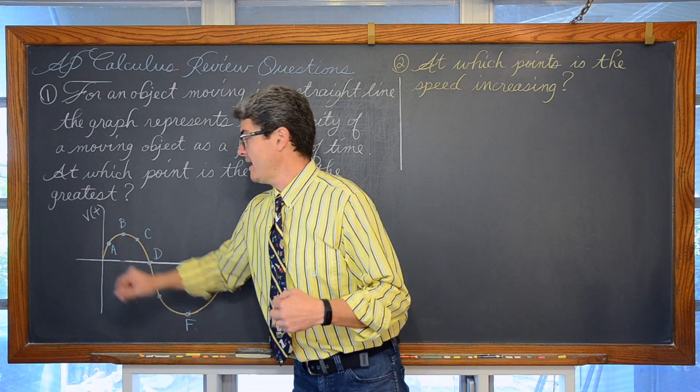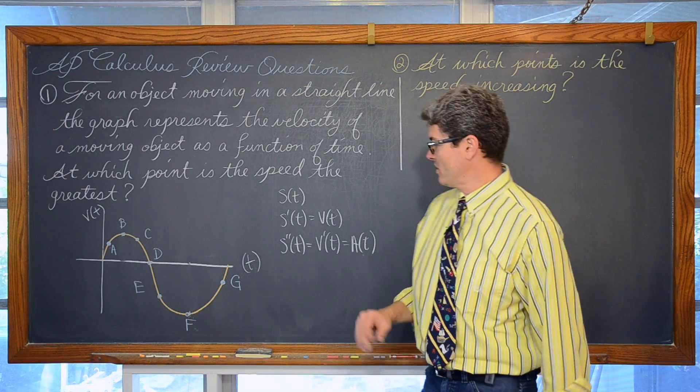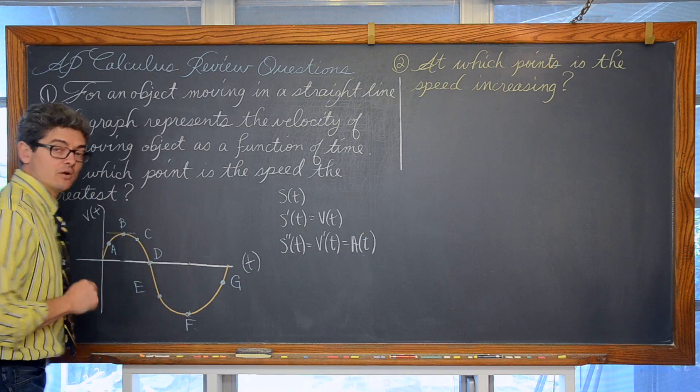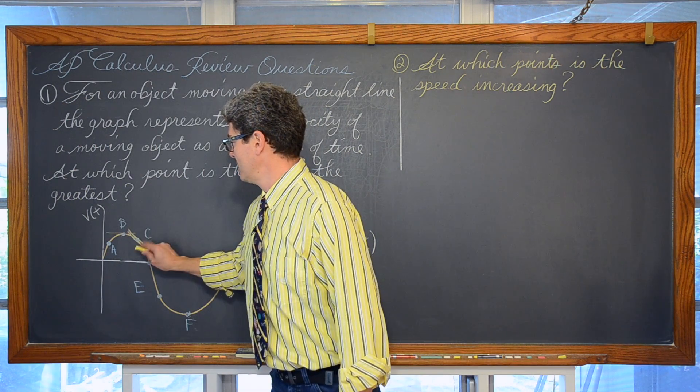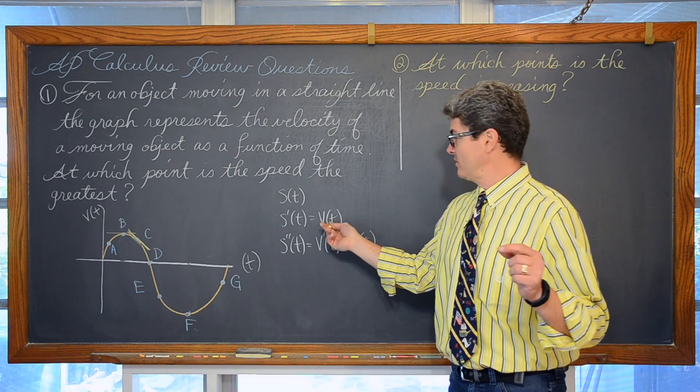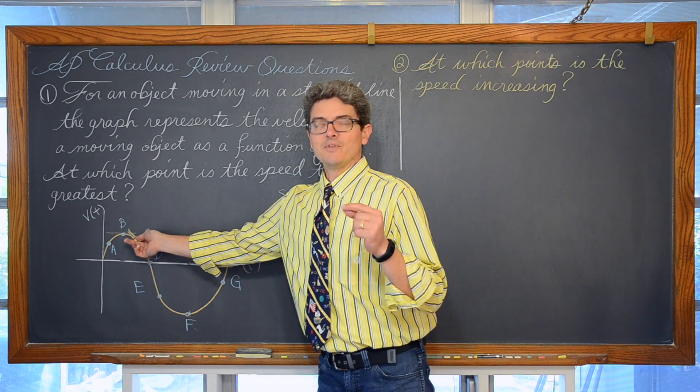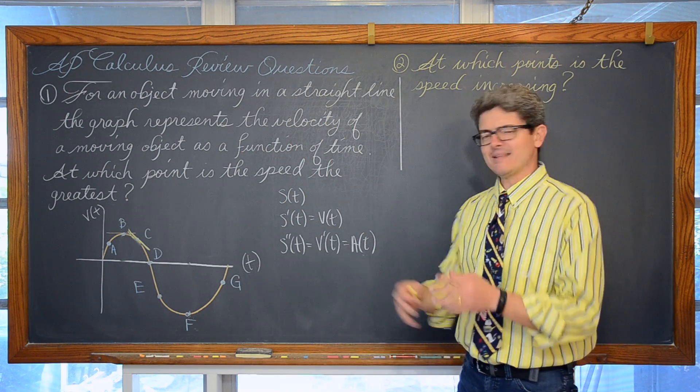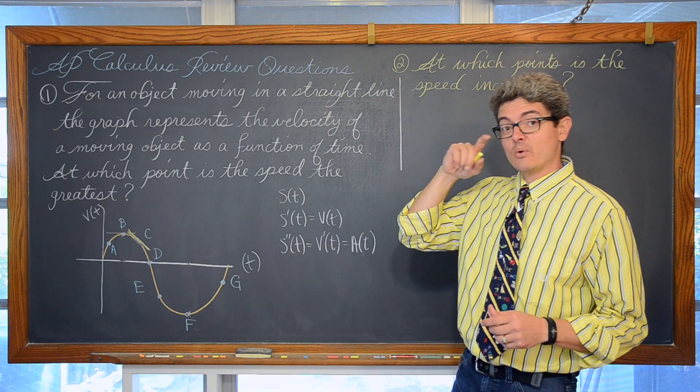At b the acceleration is zero because if I come in here and draw a tangent line, it is going to be horizontal. If I come here at c and draw a tangent line representing the slope, the slope of velocity is the acceleration. So we have a positive velocity but a negative acceleration. At that point c, this object, its speed is going to be decreasing.